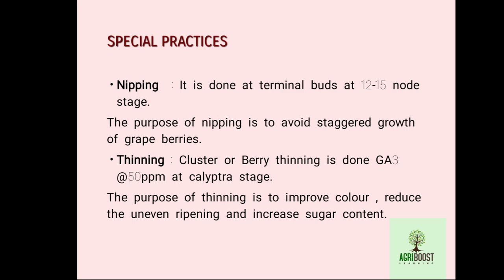For grape thinning, GA3 at 50 ppm is applied at the calyptra stage. The calyptra stage refers to the cap-like structure present in the grape flower. The purpose of thinning is to improve color, reduce uneven ripening, and increase the sugar content.